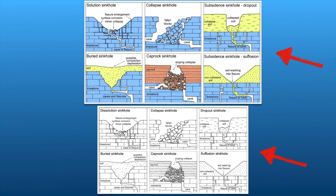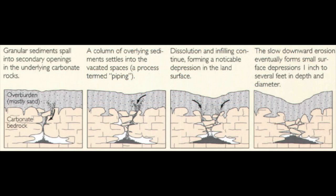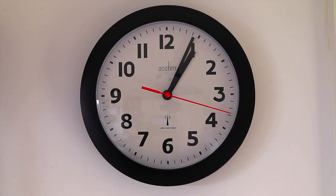The second type of sinkhole is a cover-subsidence sinkhole. These sinkholes happen in areas where sand covers the bedrock. The sand filters down into openings in the rock, gradually causing the land surface to sink. Continued erosion increases the size of the depression. Like dissolution sinkholes, cover-subsidence sinkholes happen slowly.